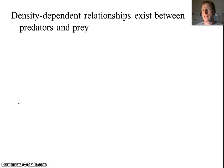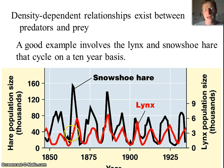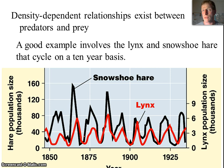A good example of a density-dependent relationship is that between predators and prey — the best example being the snowshoe hare and the lynx. Data recorded over 150 years ago shows that as hare populations went up, lynx populations went up. More food for the predators. As the predator population goes up, the prey population goes down. As the prey population goes down, the predator population goes down. We see these cyclical relationships showing both populations are dependent on and regulating each other — a good example of negative feedback in a natural predator-prey cycle.